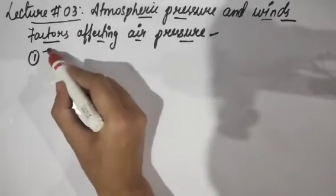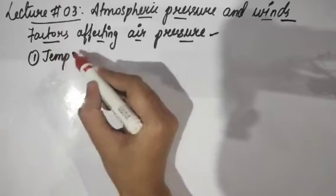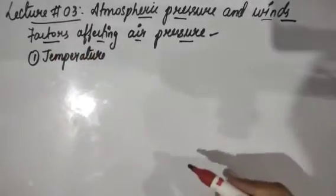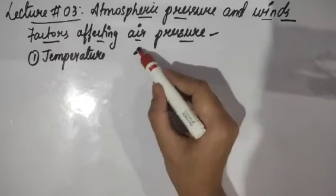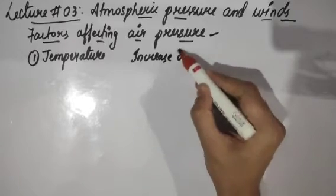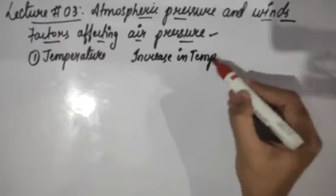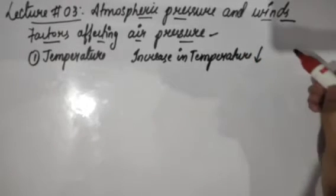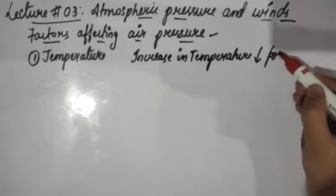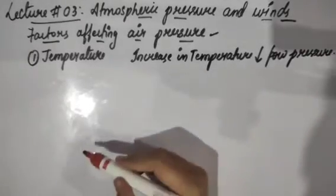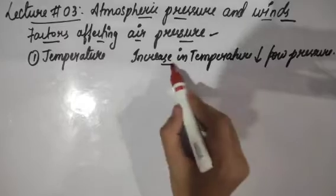The very first important factor is temperature. Now how does this temperature change the atmospheric pressure? Remember, an increase in temperature results in low pressure. An increase in temperature will give you a region of low pressure. Why is this so? Let me explain that.